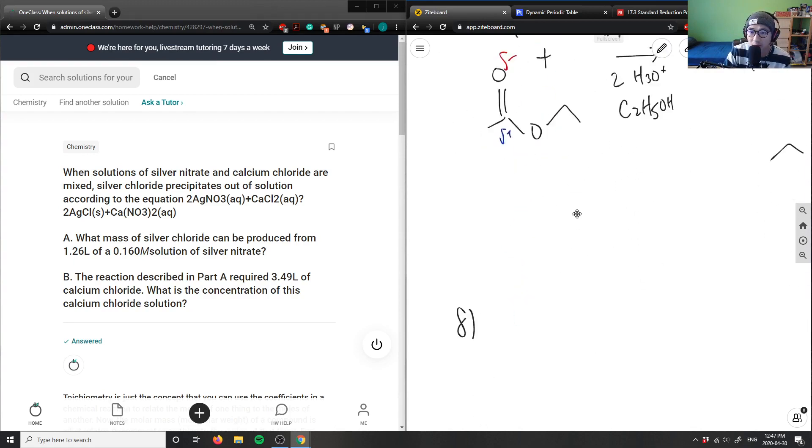Number eight here says when solutions of silver nitrate and calcium chloride are mixed, silver chloride precipitates out of the solution according to the formula. What mass of silver chloride can be produced from 1.26 liters of a 0.160 molar solution of silver nitrate?